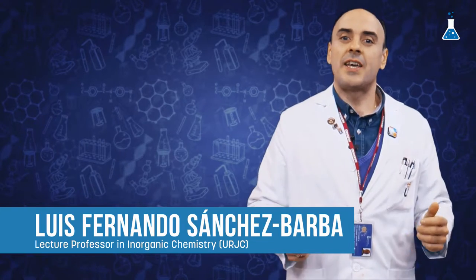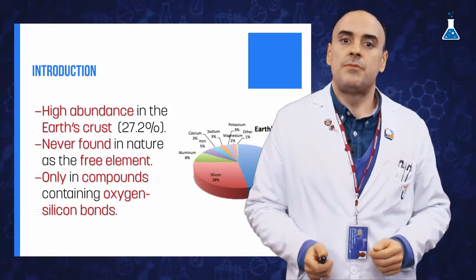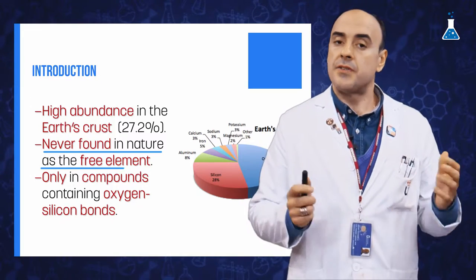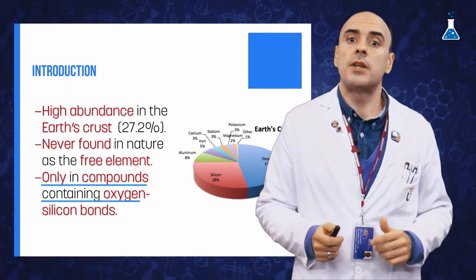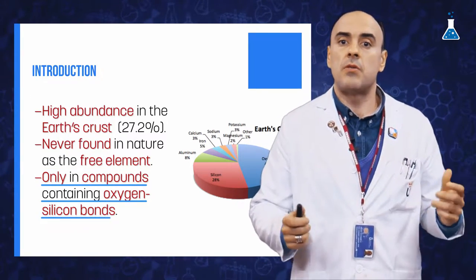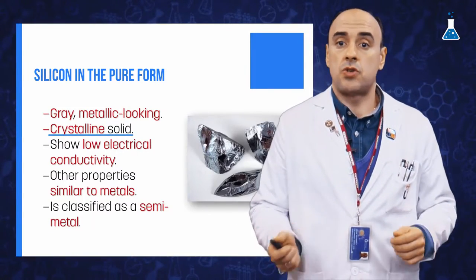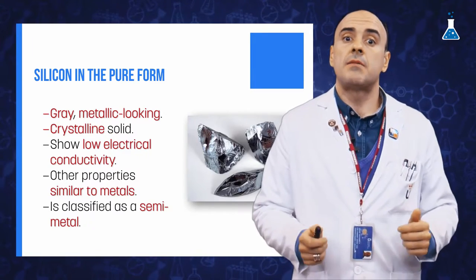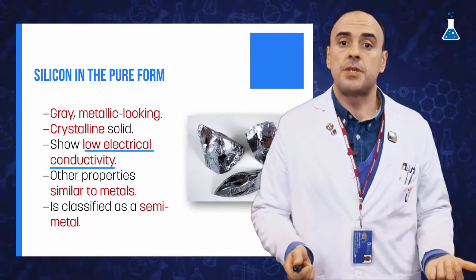In spite of the high abundance in the earth's crust of silicon, this element is never found in nature as the free element, but only in compounds containing oxygen-silicon bonds. In its pure form it is a grey metallic-looking crystalline solid. However, it is not classified as a metal considering its low electrical conductivity.